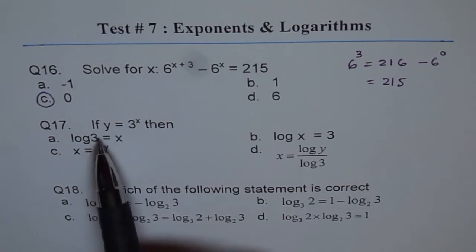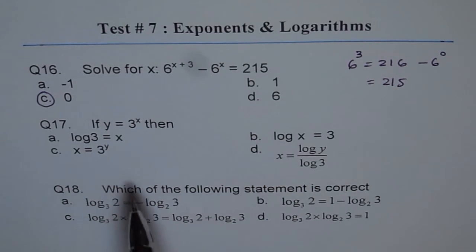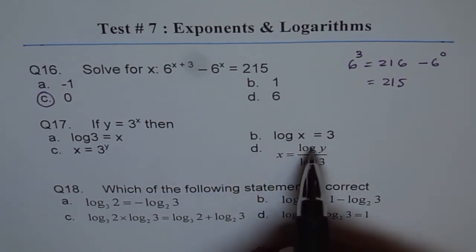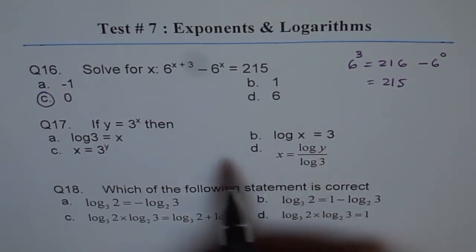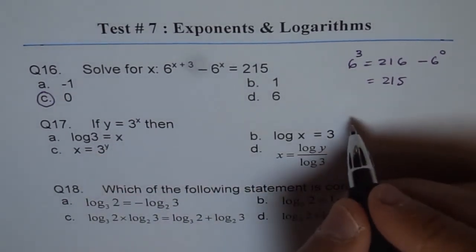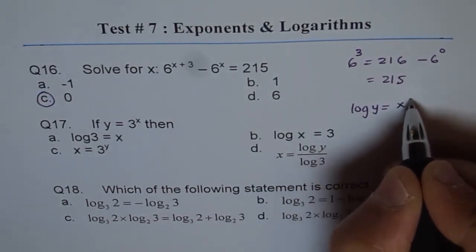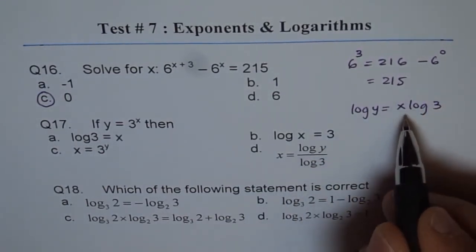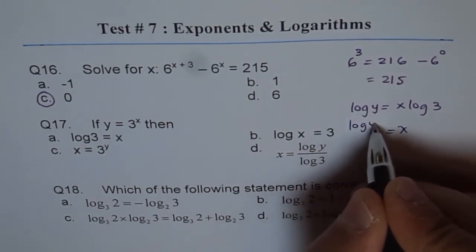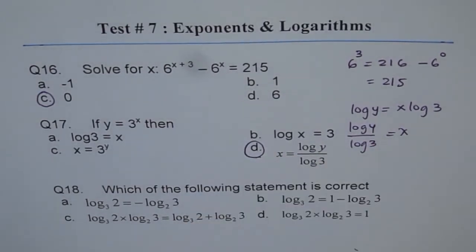Question 17: If y equals 3 to the power of x, what should be the correct option? These logarithms are all to base 10, not base 3. So taking log base 10 of both sides: log y equals x times log 3. Solving for x gives x equals log y divided by log 3. That means option D is correct.